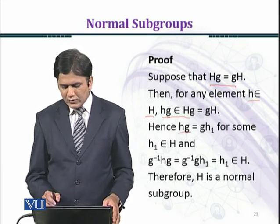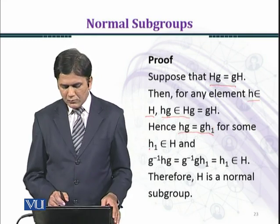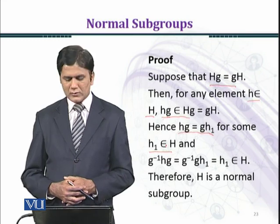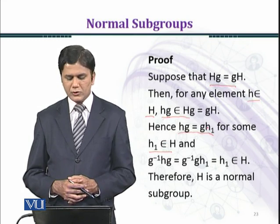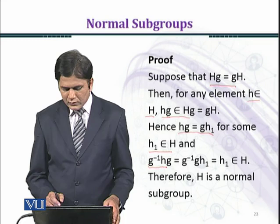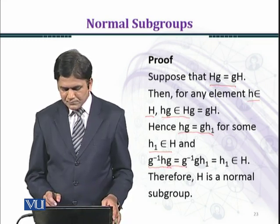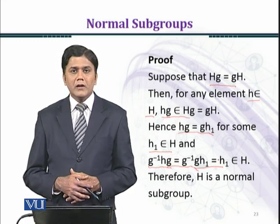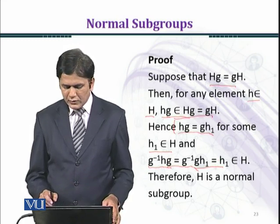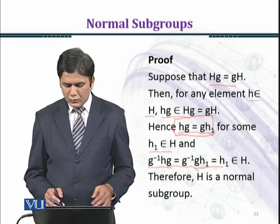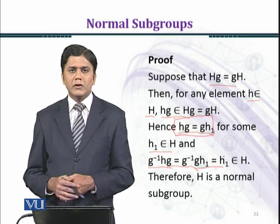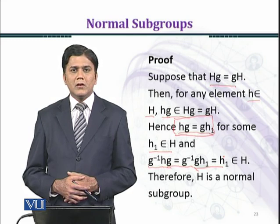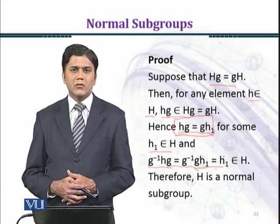Hence, hg equals gh₁ for some h₁ belonging to H. We can write this condition as: g⁻¹hg equals g⁻¹gh₁, which equals h₁. Therefore g⁻¹hg equals h₁, which belongs to H. So H is a normal subgroup of G, satisfying the condition according to the definition.